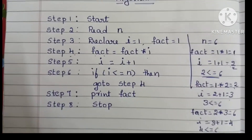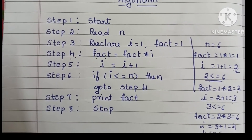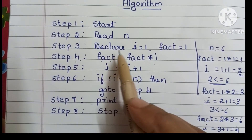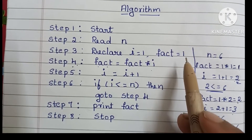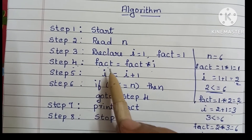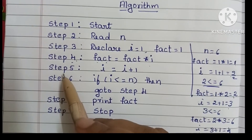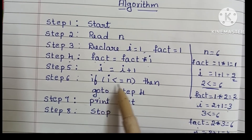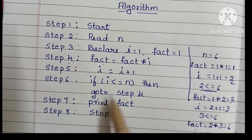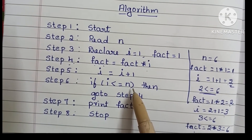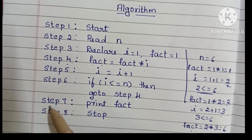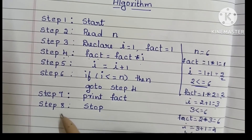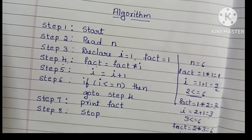So this is the algorithm to find factorial of a number. Step 1: Start. Step 2: Read n. Step 3: Declare i equal to 1 and fact equal to 1. Step 4: Calculate fact equal to fact into i. Step 5: Calculate i equal to i plus 1. Step 6: If i is less than or equal to n, go to step 4; otherwise go to step 7. Step 7: Print fact. Step 8: Stop.